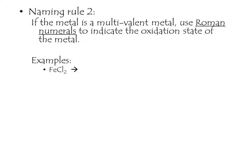Let's take FeCl2 as our first example. The first step is to look at the charge of the anion — in this case, chlorine. There are two chlorines, each with a minus 1 charge. Totaling the anion charges gives us minus 2. In an ionic compound, the charges of the cation and anion must cancel out to give a total charge of zero, so the cation must have a total charge of plus 2.